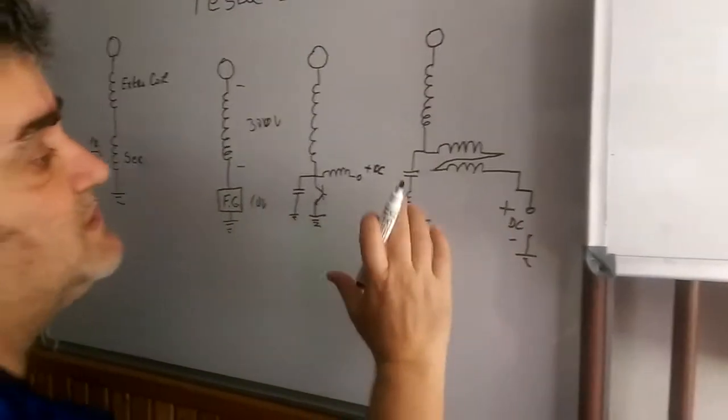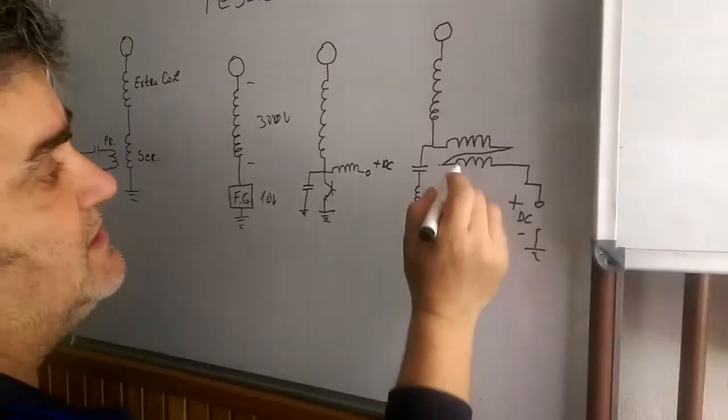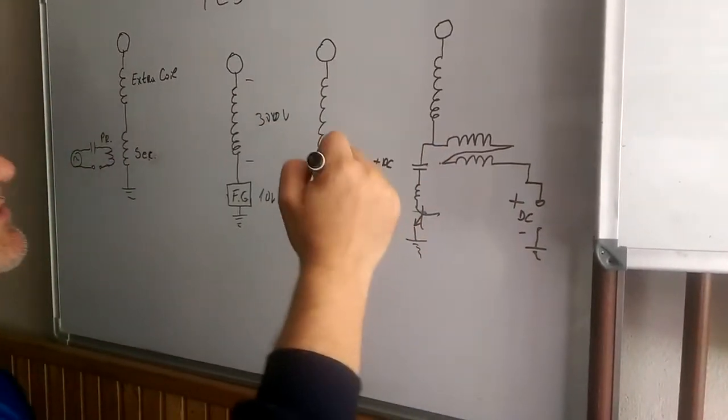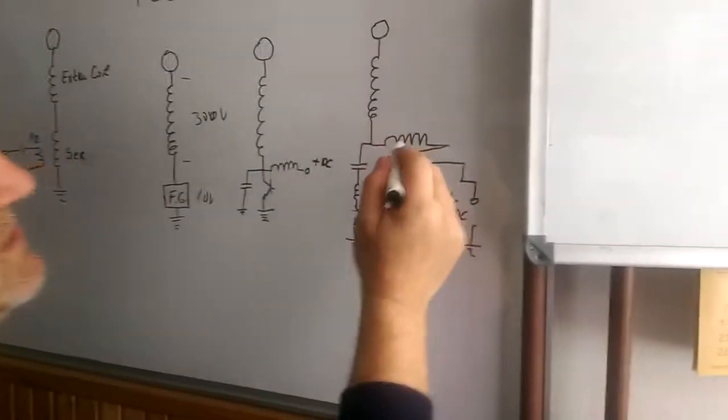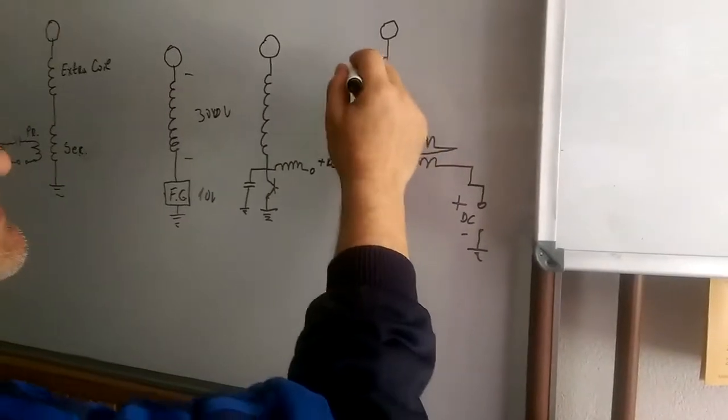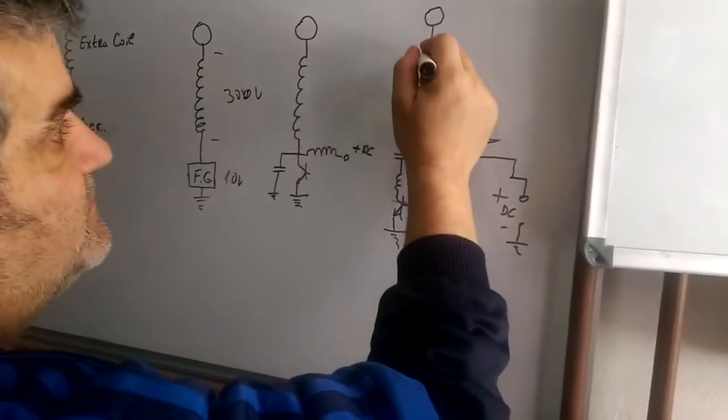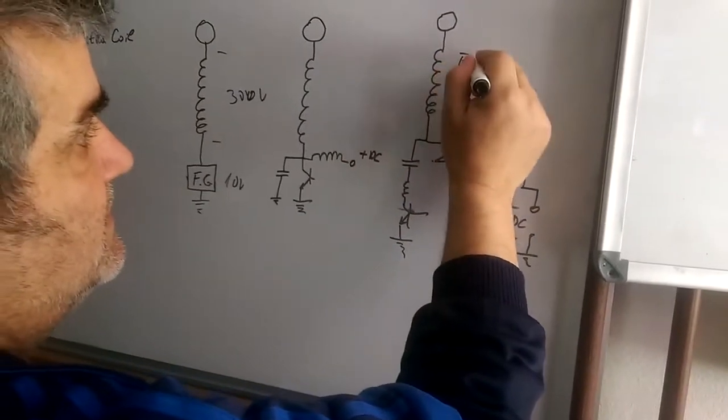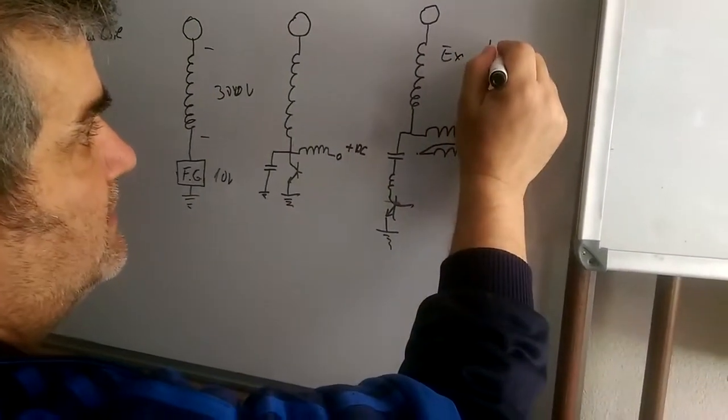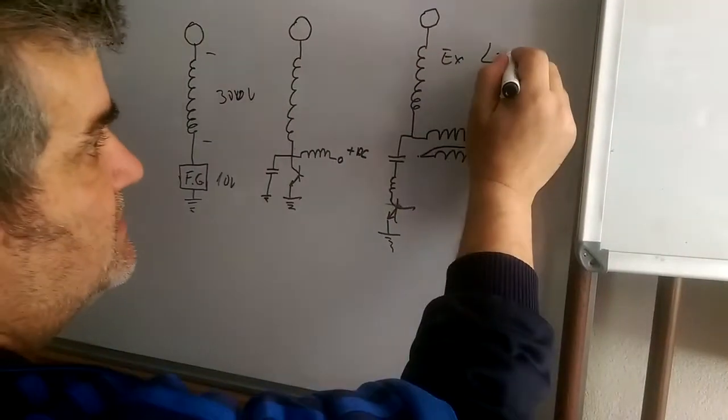As I said in Tesla coil, how I am tuning resonance and calculating the length of this extra coil, the length of wire. Let's say I will show it, we have the coil with 300 meters length of wire.